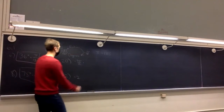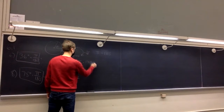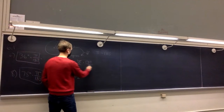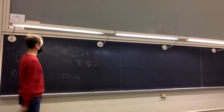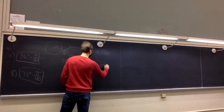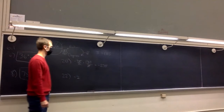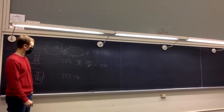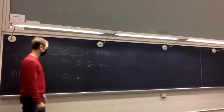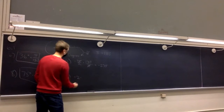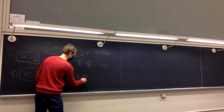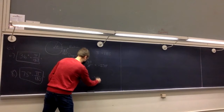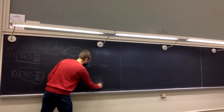Here we've got radians, and we want to go down to degrees, so we multiply by 180 degrees over π. The π cancels and what you're left with is a number — negative 270 degrees. But with negative 2 radians, the π doesn't cancel, so you're literally left with negative 360 over π degrees.